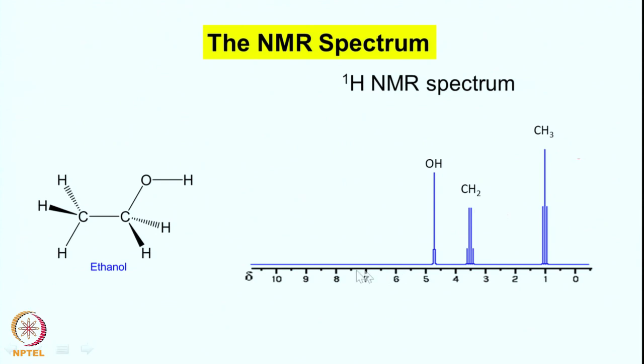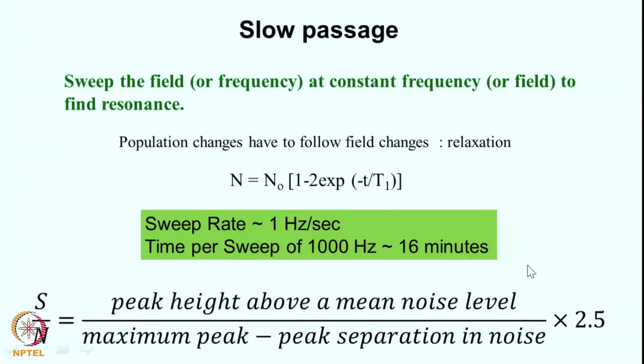In the early days, the method was called the slow passage experiment — you have a particular magnetic field, you sweep the frequency, reach the resonance condition and get the signal. Alternatively, you can keep the frequency constant and sweep the field. It was more convenient to sweep the field rather than the frequency in those days because the magnets were electromagnets and you can simply change the current to change the field.